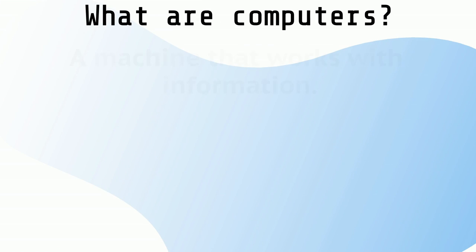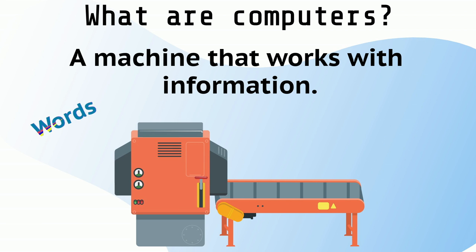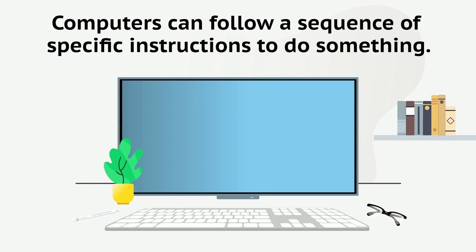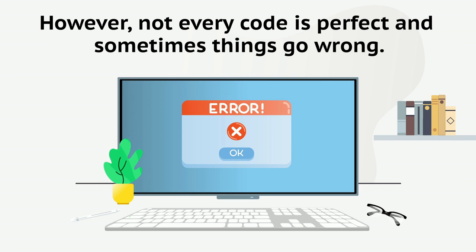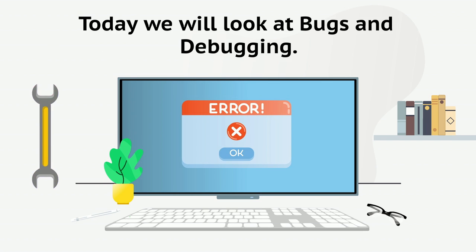A computer is a machine that works with information. This information can be words, numbers, pictures, sounds, or movies. Computers can follow a sequence of specific instructions to do something. However, not every code is perfect, and sometimes things go wrong. Today, we will look at bugs and debugging.